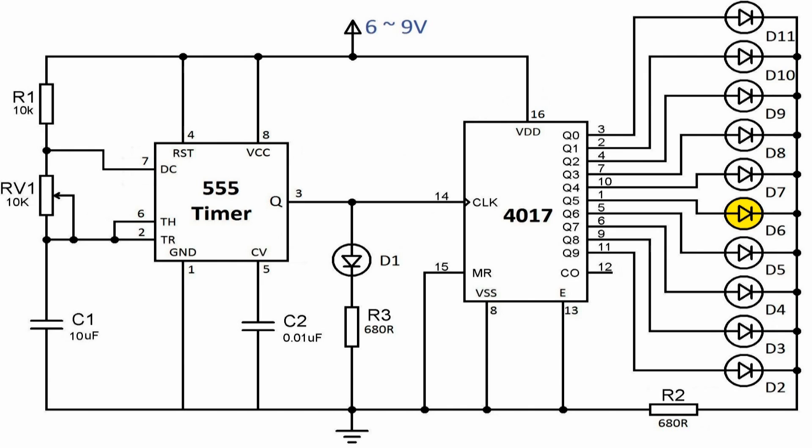The preset RV1 can be used to adjust the output frequency of 555 timer, which can be used to adjust LED chasing speed.